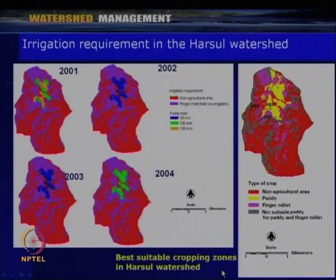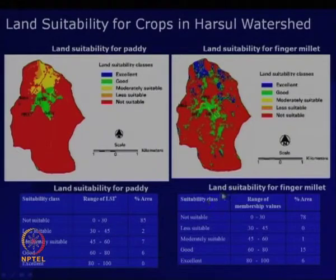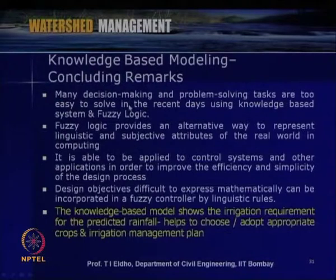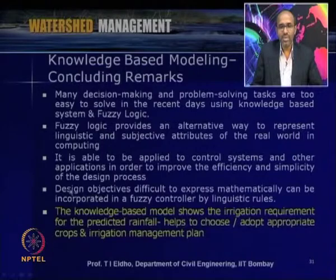Using the knowledge-based model, we can identify land suitability for particular crops — paddy and finger millet — and determine which areas are most suitable, moderately suitable, or less suitable. Suitability classes and the range of land suitability index are given along with percentage area for each class. Many decision-making and problem-solving tasks in watershed management are well addressed using fuzzy logic, and knowledge-based models show irrigation requirements for predicted rainfall, helping choose appropriate crops and irrigation management plans.